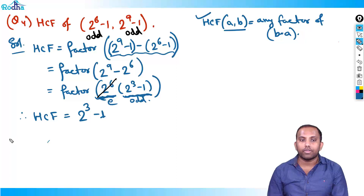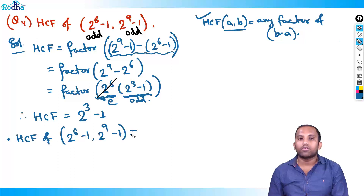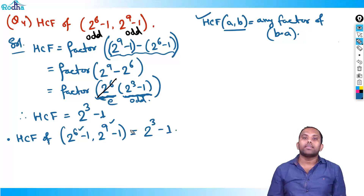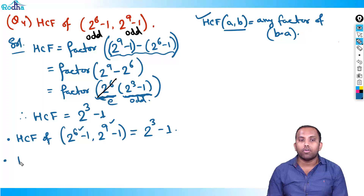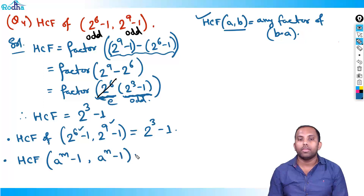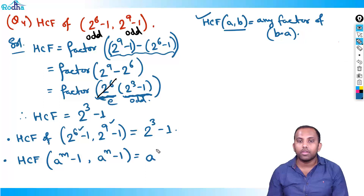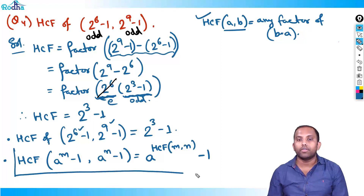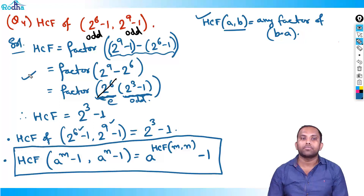You can directly apply this shortcut: HCF of 2^6 - 1 and 2^9 - 1 is like finding HCF of 6 and 9, which is 3, so 2^3 - 1. The general formula is: HCF of (a^m - 1) and (a^n - 1) equals a^(HCF of m,n) minus 1.